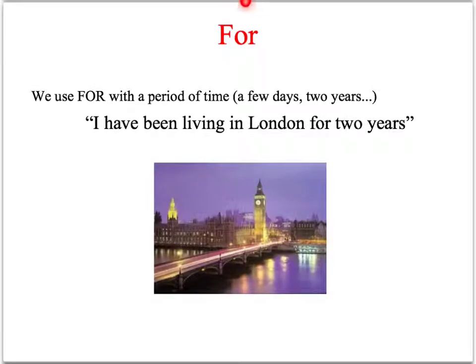We use 'for' to express the period of time — for example, a few days, two years, one month, etc. For instance: 'I have been living in London for two years.' This means that we started living there two years ago.